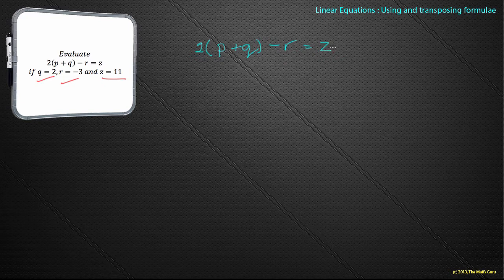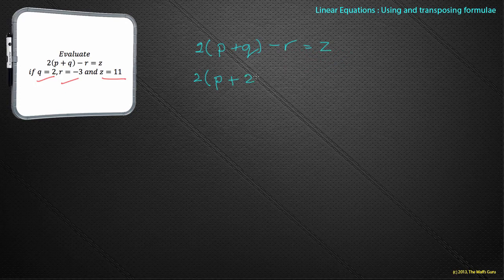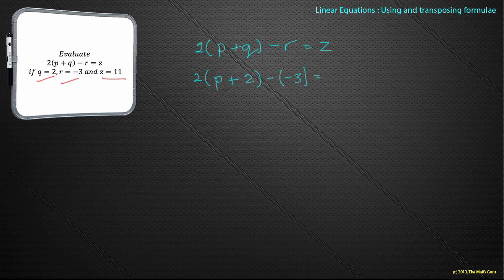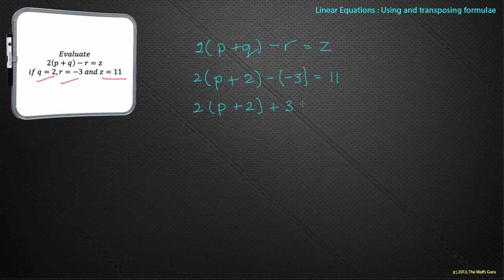Evaluate in this instance just means substitute the numbers and see what happens. So we've got 2(p + q). Well, 2 is fine. What is p? We don't know what p is, so I'm just going to write the p. But it does tell me that q is 2, so I'm going to substitute the q. And minus r - we need to be very careful because r is minus 3, so we are minus minus 3. Minus minus becomes plus, equals 11.